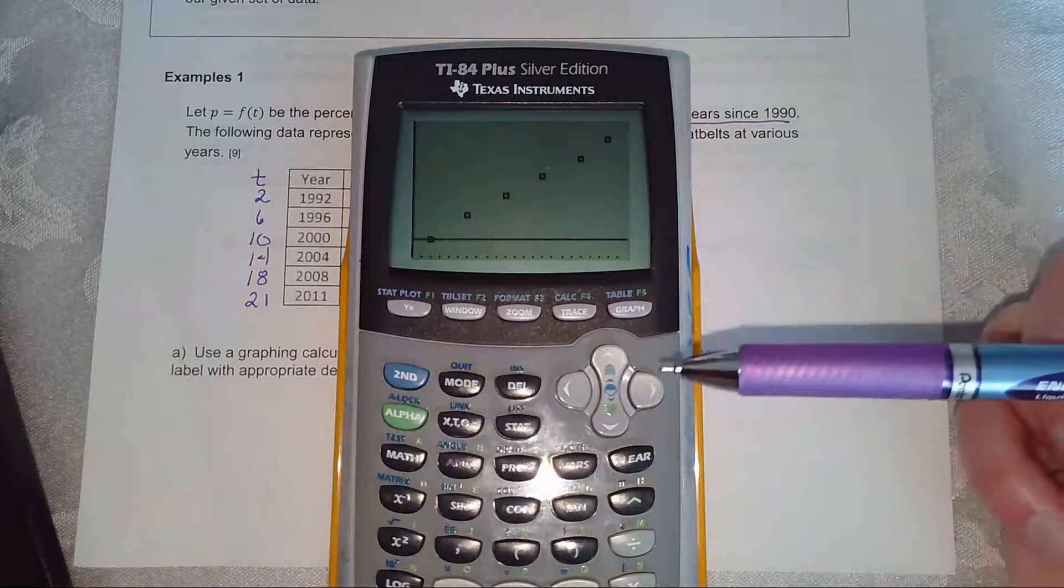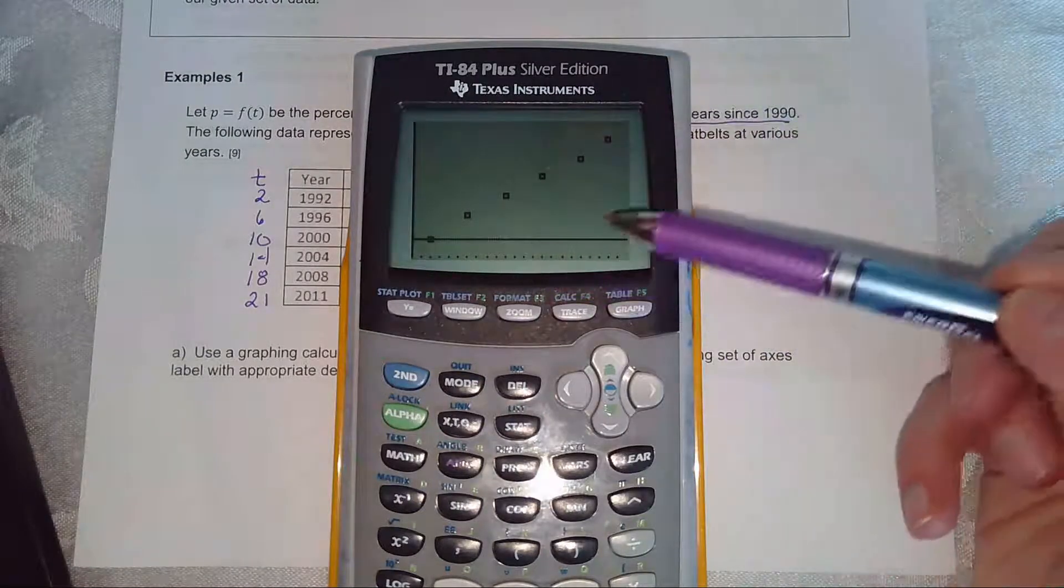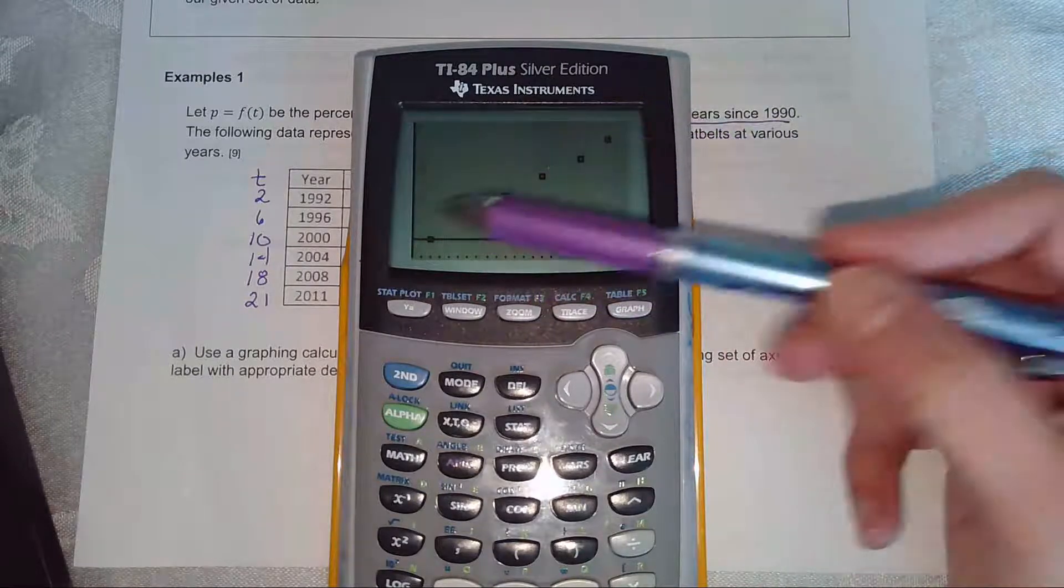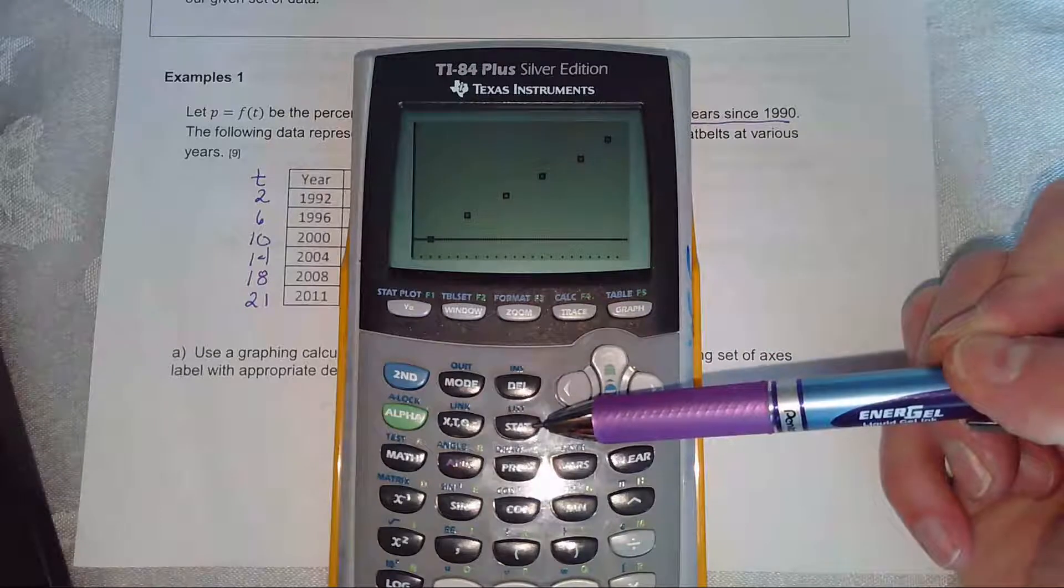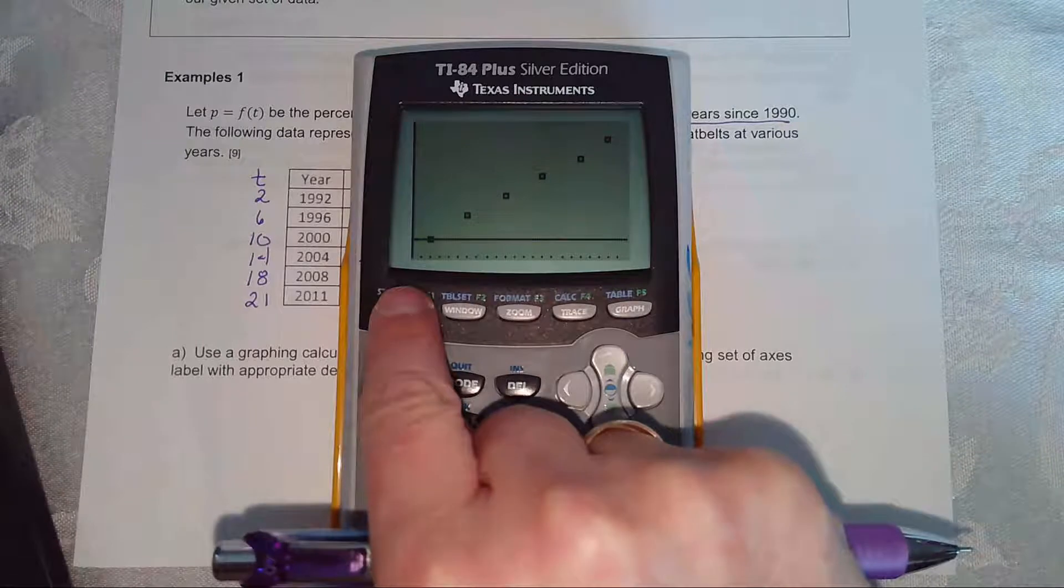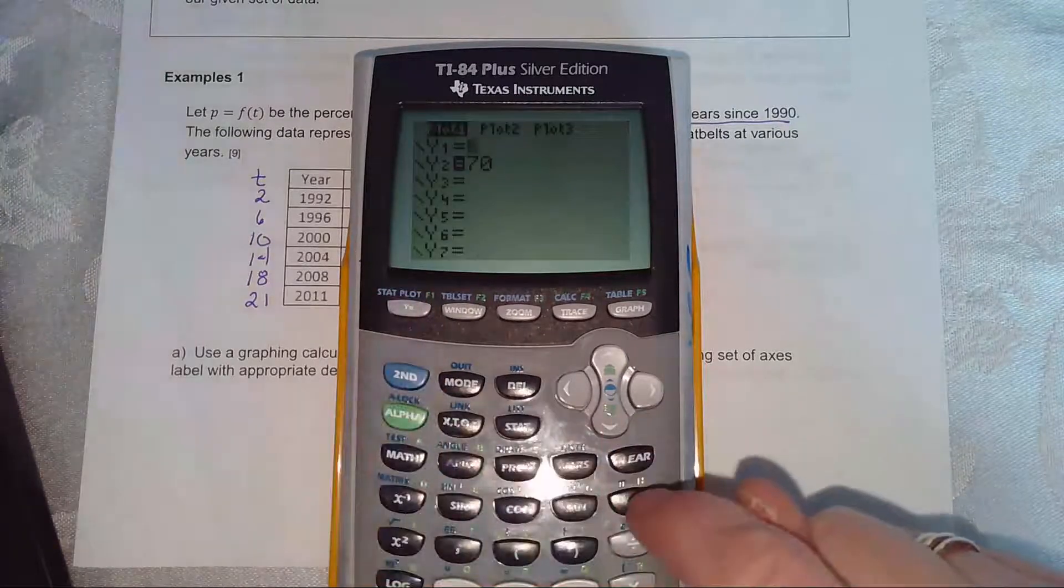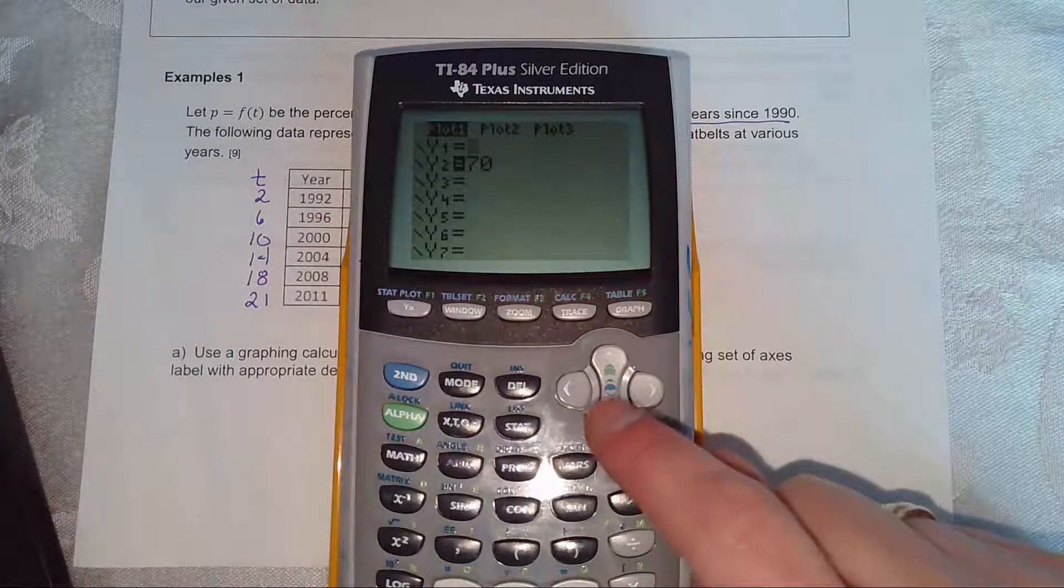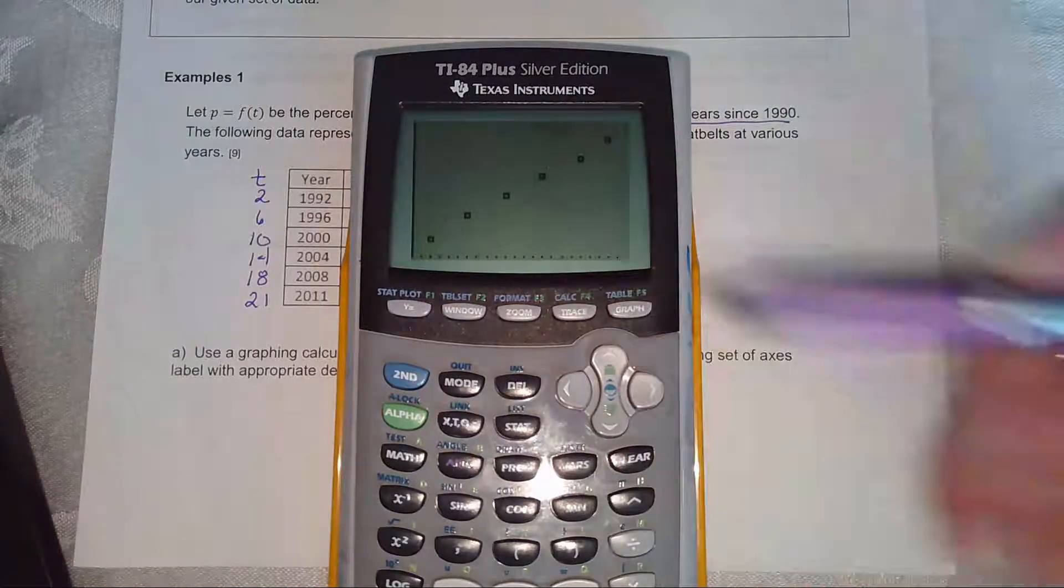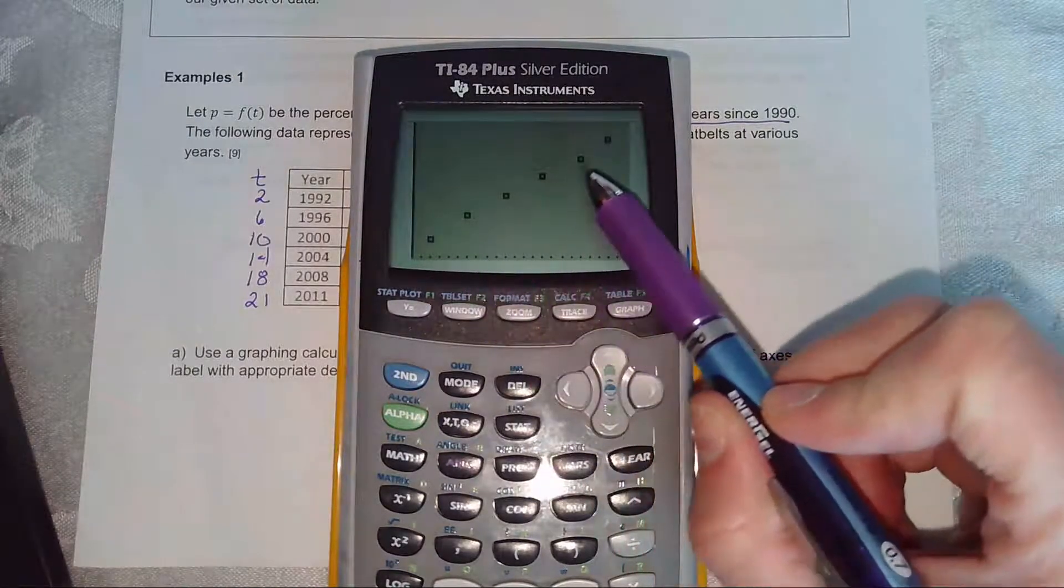And that will automatically make a window. I got some stuff I got to clear out of my y equals. That'll make a window where you can plot the points that you entered into your stat. Now, if you get some weird lines coming through, you have some stuff in y equals. So I'm going to go to my y equals and I'm just going to clear everything out. And now when I go to graph, I should just see that nice set of ordered pairs.